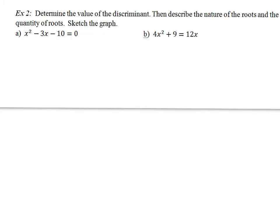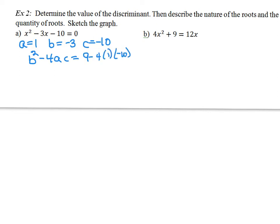In exercise number 2, we're going to determine the value of the discriminant and then describe what kind of roots and how many roots our quadratic equation would have. In our first example, x squared minus 3x minus 10 equals 0, a equals 1, b equals negative 3, and c equals negative 10. So the discriminant, b squared minus 4ac, gives us negative 3 squared minus 4 times 1 times negative 10, which equals 49.